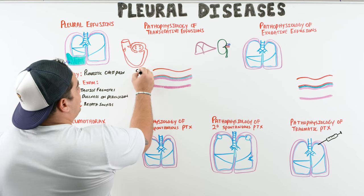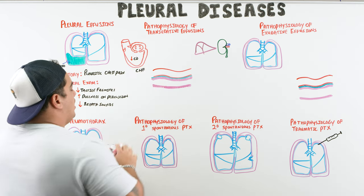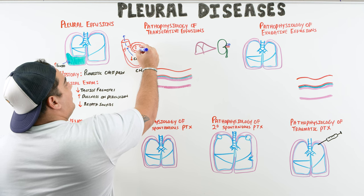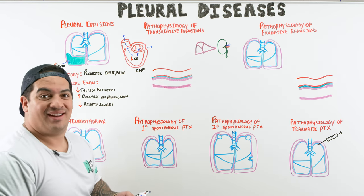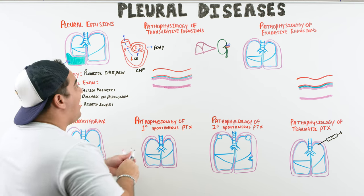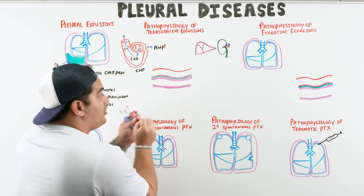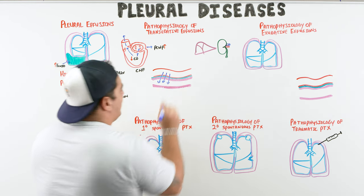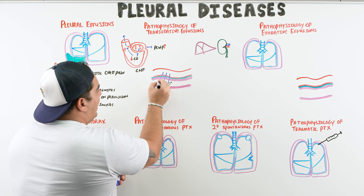One of the most common causes of a transudative effusion is congestive heart failure. In CHF, cardiac output is poor — blood backs up into the left atrium, then into the pulmonary veins. Pulmonary capillary wedge pressure rises, increasing hydrostatic pressure in the capillaries. This pushes water, electrolytes, and small filtrates — but very little protein — into the pleural space.